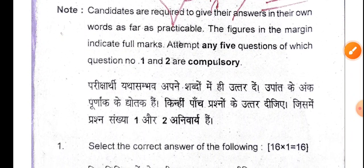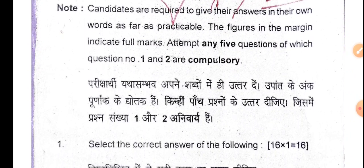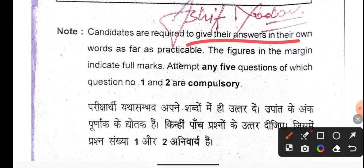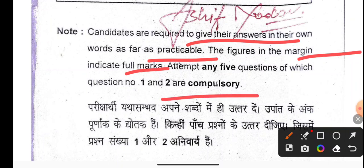First of all, we will read the instructions: candidates are required to give their answers in their own words as far as practicable. The figure in the margin indicates full marks. Attempt any five questions; question number one and two are compulsory. There are 10 questions in total. Question number one contains the objective type and question number two contains the short notes.